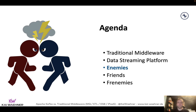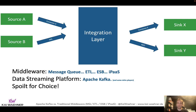Now, how do these technologies compete with each other? Both want to be the integration layer in the middle. From a middleware perspective, you have message queues, ETL tools, ESBs, and increasingly iPaaS in the cloud. On the other side, you have data streaming platforms — primarily Apache Kafka, used by over 100,000 organizations in 2022. This is clearly the de facto standard. Now you have a choice between traditional middleware and data streaming for your integration layer.